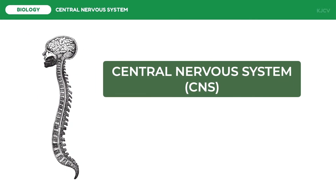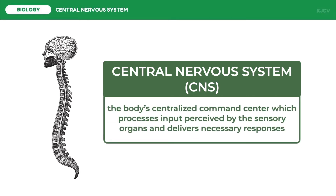The central nervous system is the body's centralized command center which processes input perceived by the sensory organs and delivers necessary responses. The CNS consists of the brain and the spinal cord. The estimated 100 billion neurons in your brain are assembled into complex networks that enable you to subconsciously regulate your internal environment, experience emotions, and voluntarily control your movements.